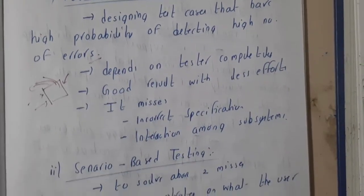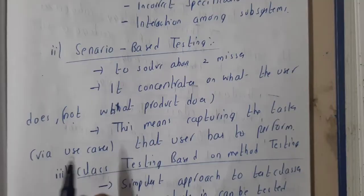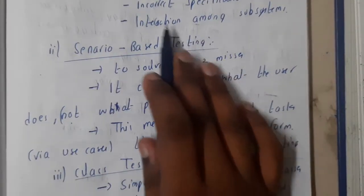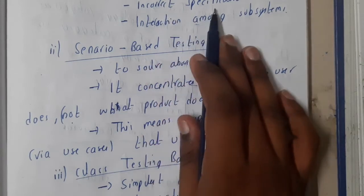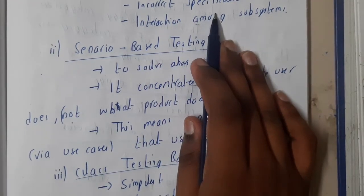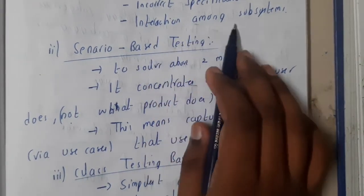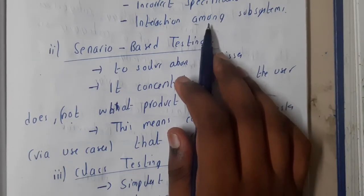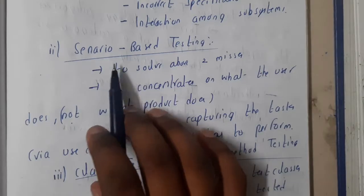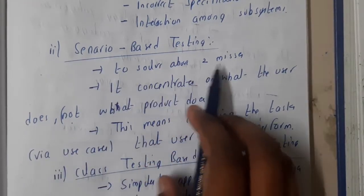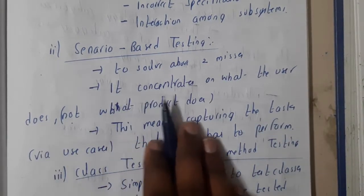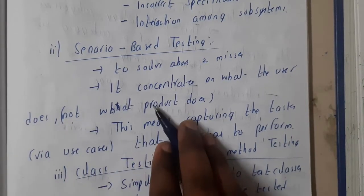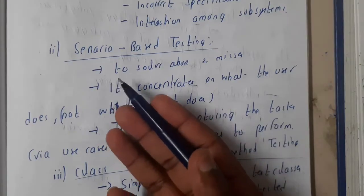Now let us go through scenario based testing, which addresses the two misses of fault based testing: incorrect specifications and interactions among subsystems. To solve these two problems, we use scenario based testing. It concentrates on what the user does, not what the product does.